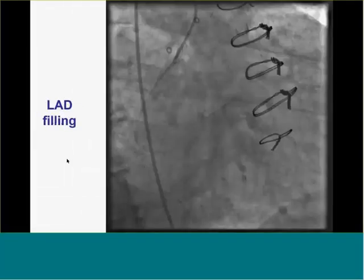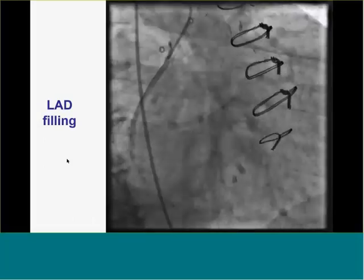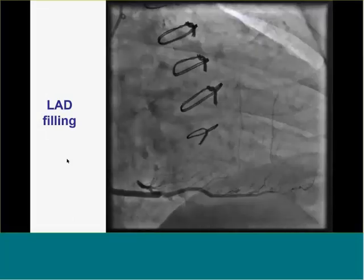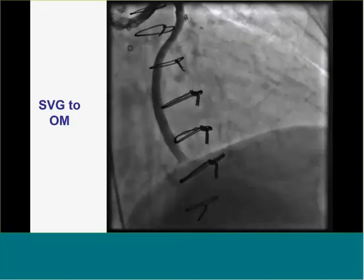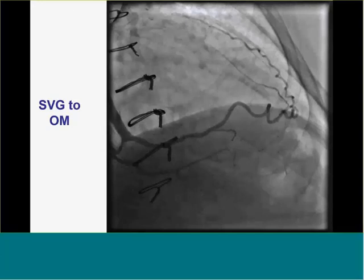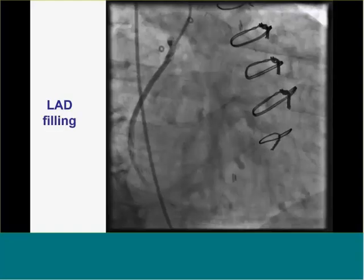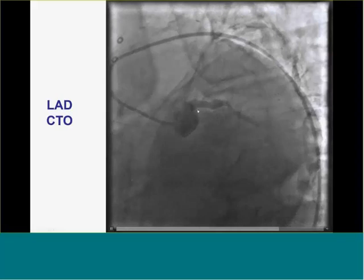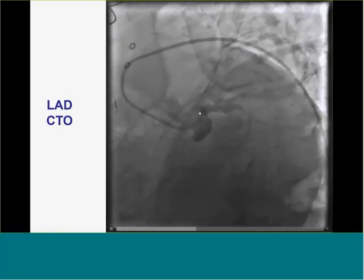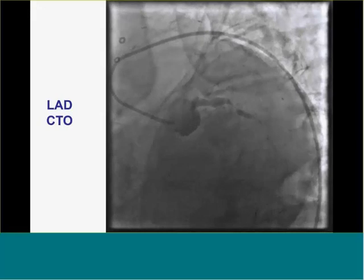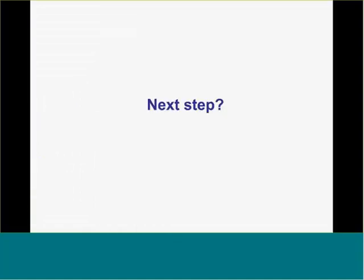Any thoughts on approach? It's a fairly long occlusion — from the beginning of the LAD, reconstitution at the mid-to-distal segment. The suggestion: try antegrade first since there's a stump to engage, probably needing dissection re-entry or CrossBoss at some point, with a second guide into the vein graft to the right to guide retrograde if needed. Starting retrograde wouldn't be unreasonable given such a long occlusion, but since we were evaluating new wires, we thought it worth an antegrade try anyway.